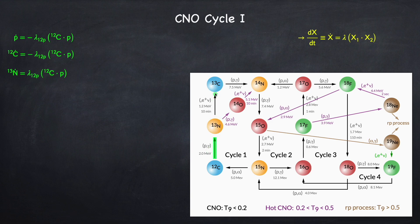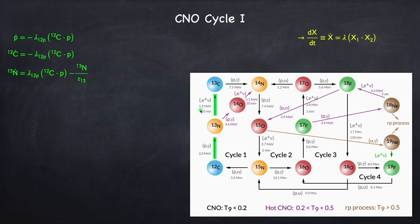Now we have nitrogen-13. The next step is a beta decay — we're not capturing anything, we just have to wait around for nitrogen-13 to decay into carbon-13. In this reaction we're destroying a nitrogen-13, and the way we write this is as nitrogen-13 divided by tau-13, where tau-13 is the average time you have to wait for nitrogen-13 to decay. Ten minutes is the half-life, and the average time you have to wait is related to the half-life by a factor of natural log of 2. This is going to create a positron and neutrino, which we're not going to keep track of. So the only thing left is the creation of carbon-13 at the same rate.